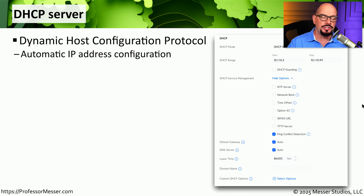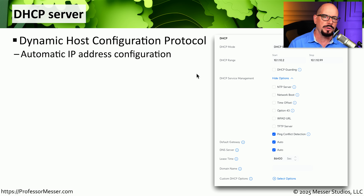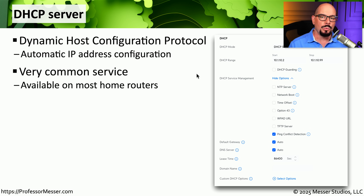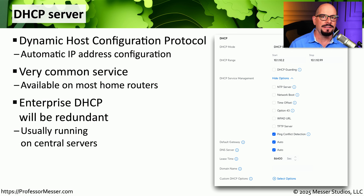Another important service is DHCP, or Dynamic Host Configuration Protocol. This is the protocol that's able to automatically assign IP addresses and other configuration settings any time you start your computer. You don't have to remember IP addresses or type anything in — DHCP will take care of all of that work for you. This is a widely used service seen on home networks and enterprise networks alike. In the enterprise, we tend to have multiple DHCP servers for redundancy, so if one server is suddenly unavailable, others can still provide IP address information for devices on the network.